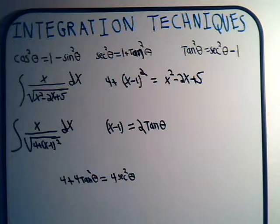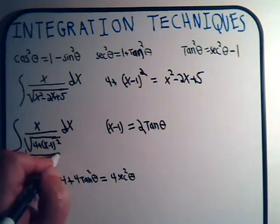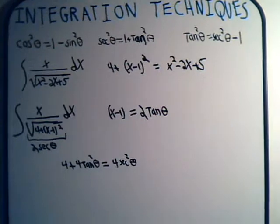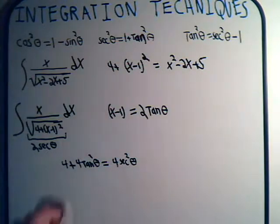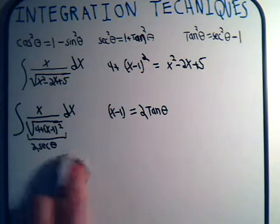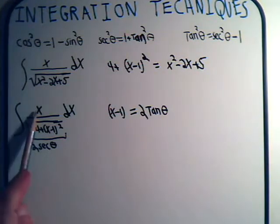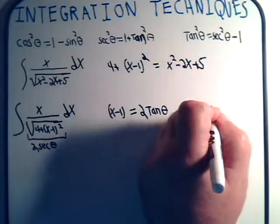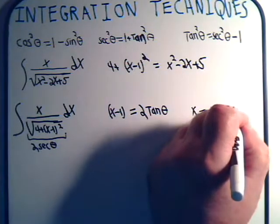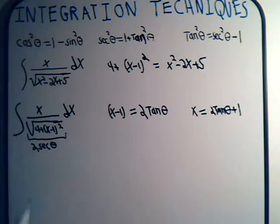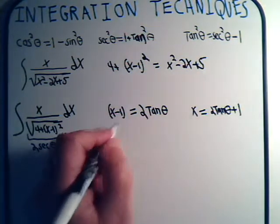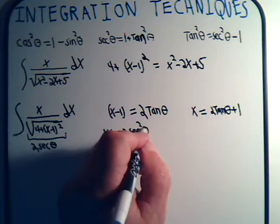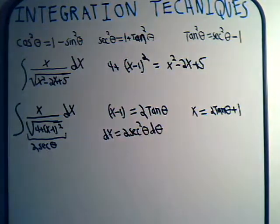Taking the square root of that, the square root expression becomes 2 times the secant of theta. We still need x: since x minus 1 equals 2 tan θ, x equals 2 tan θ plus 1. And dx equals 2 secant squared theta dθ.